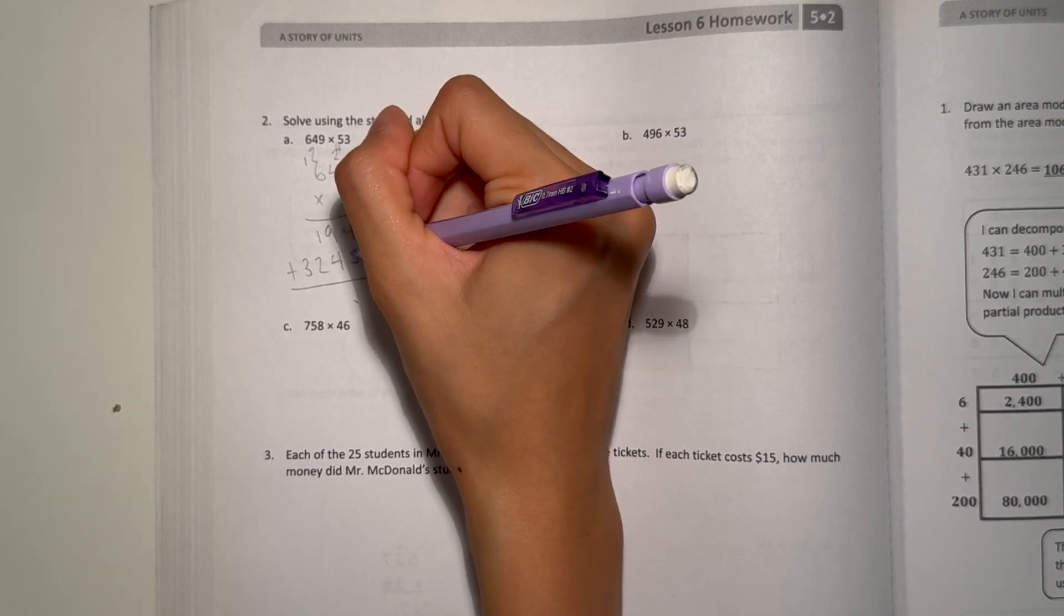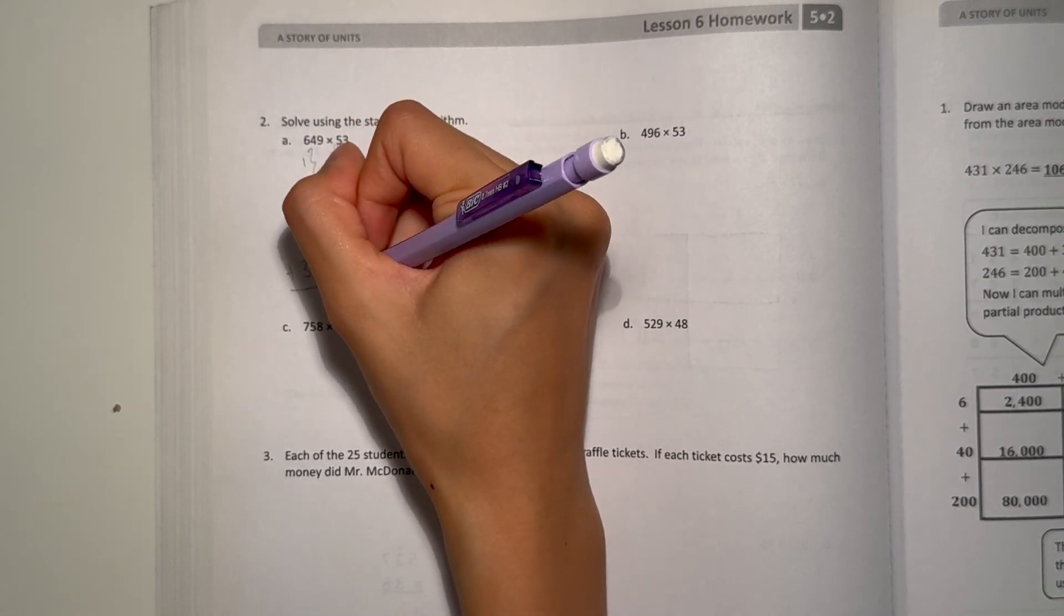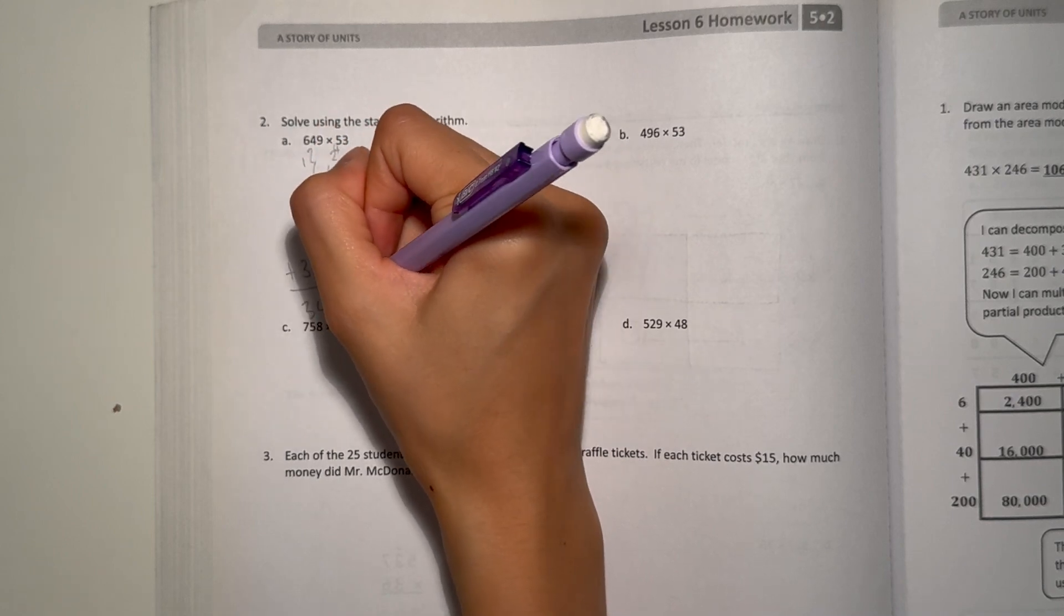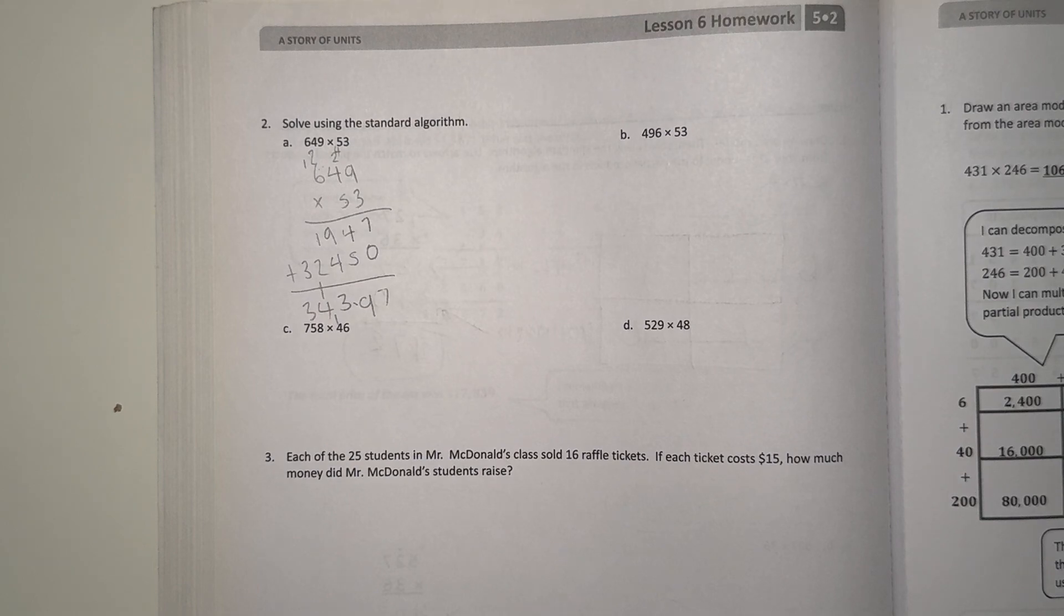7 plus 0 is 7. That's 9. 13. 4 and 3. So 34,397.